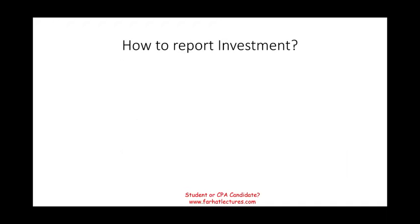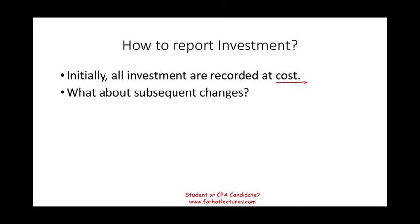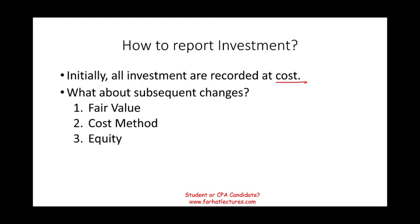So how do we report investments? As accountants, we want to know: we made an investment in another company — how do we report it? At the beginning it's easy: all investments are recorded at cost, meaning however much we paid for them. But what about subsequent changes? The investment might go up or down in value, pay us dividends, or go bad. GAAP says we have four methods: the fair value method, the cost method, the equity method, or the consolidation method.